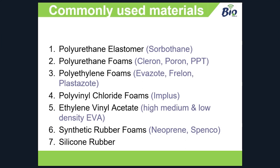A polyurethane foam might have several different brand names, and they might have slightly different properties, but essentially a lot of the time we're calling one thing under various different names, which can get confusing. A paper by Rome reviewed the most popular materials used by podiatrists and divided them into seven groups: polyurethane elastomers such as Sorbothane; polyurethane foams like Clearon, PPT, and Poron; polyethylene foams such as Evazote, Freelon, and Plastazote; polyvinyl chloride foams; ethyl vinyl acetate or EVA; synthetic rubber foams; and neoprene, Spenco, and silicone rubber.